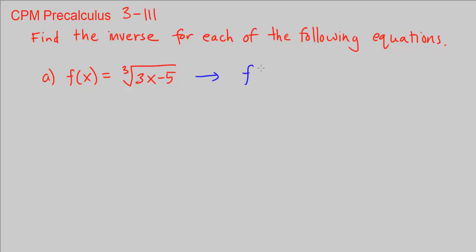So the inverse is asking us to find the inverse function of f. Remember step 1 is to go ahead and set it equal to y instead of f of x. So I'm going to just put 1, y equals the cube root of 3x minus 5.